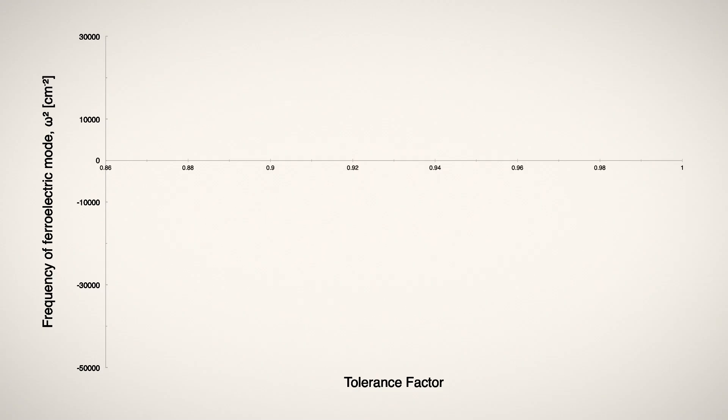Here we've plotted the values for the set of ABO3 materials in the distorted PNMA space group. This is the structure in which most of these materials naturally occur. We see no trend as a function of the tolerance factor. This is what we would expect if rotations suppress ferroelectricity.